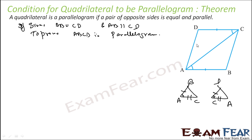So these two triangles are congruent by the Side-Angle-Side (SAS) rule. Since they are congruent, DA is equal to BC. Also, angle DAC is equal to angle BCA. These two angles being equal means AD is parallel to BC. And AB is parallel to CD — given. Therefore, ABCD is a parallelogram.